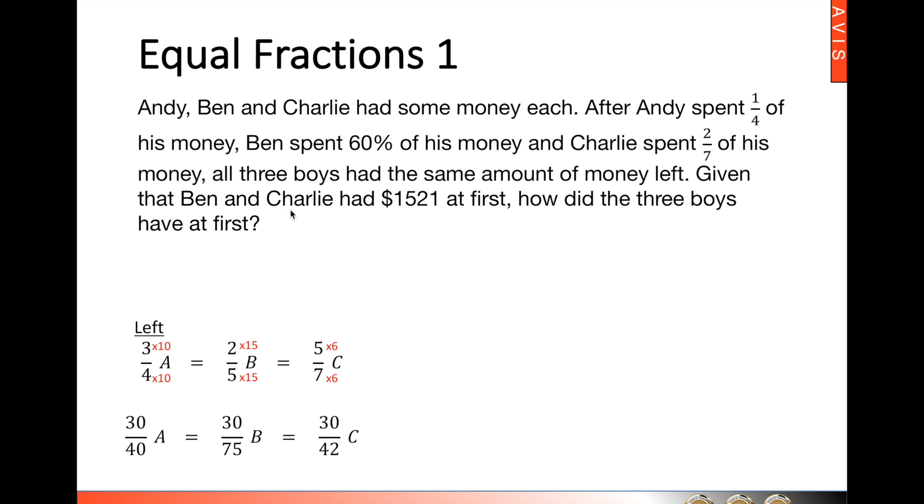Given that Ben and Charlie had $1,521 at first. Please note that Ben had seventy-five units and Charlie had forty-two units at first. And since we are talking about the total, we will take seventy-five units plus forty-two units. That gives us one hundred and seventeen units, which is now $1,521. So we get one unit by taking 1521 divided by 117. That gives us 13.